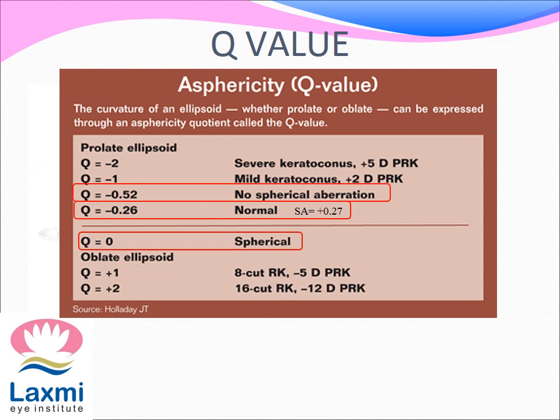A zero spherical aberration surface has a Q value of minus 0.52. The more prolate the surface, the lower the Q value, which is seen in keratoconus corneas. And the more oblate the surface, the higher the Q value, which is seen in post radial keratotomy corneas.